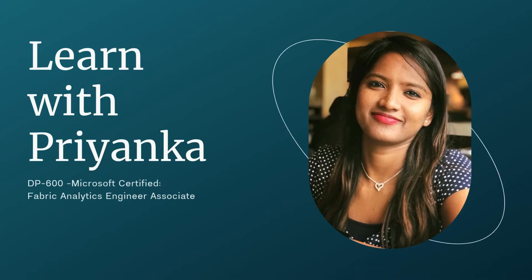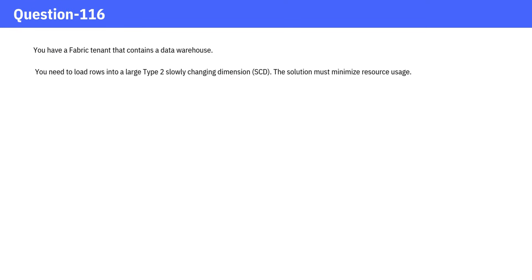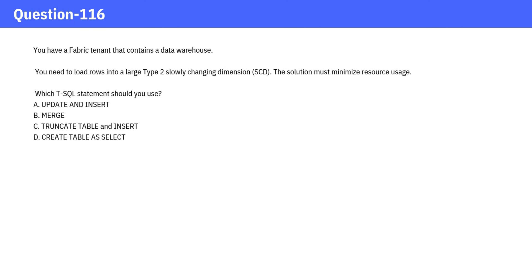Welcome to Learn with Priyanka. Question: You have a Fabric tenant that contains a data warehouse. You need to load rows into a large Type 2 slowly changing dimension (SCD). The solution must minimize resource usage. Which T-SQL statement should you use?